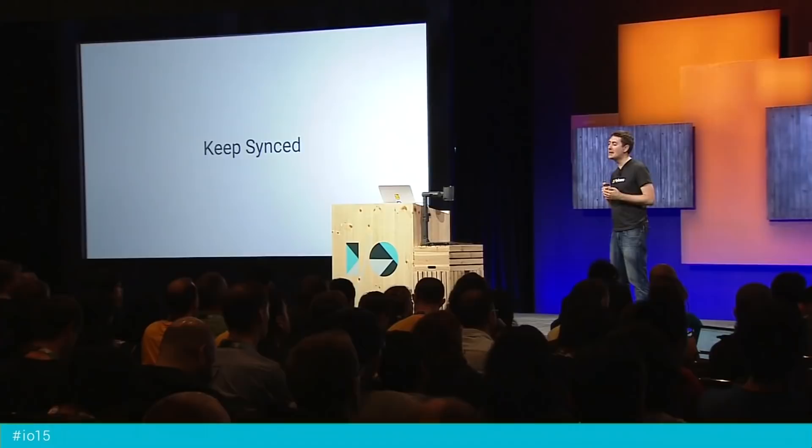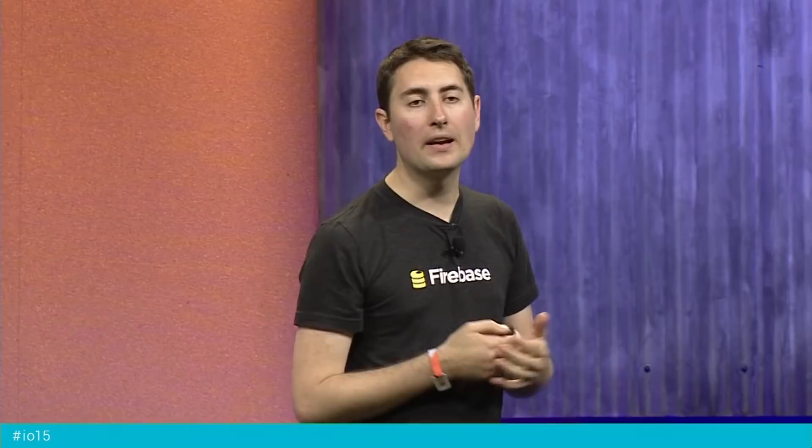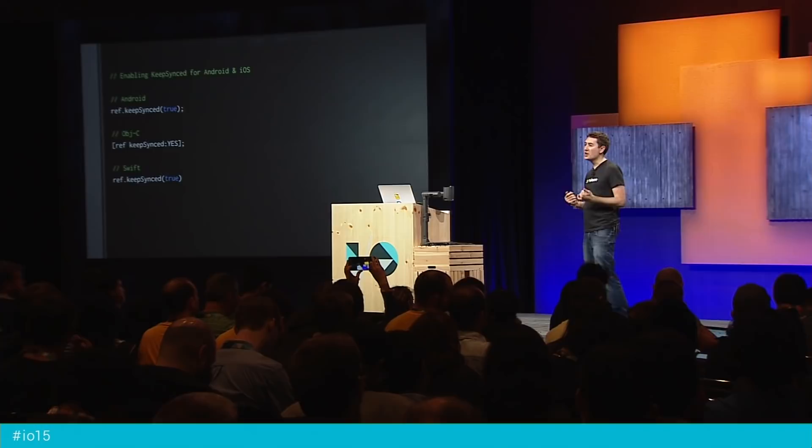The next piece of full mobile offline support is KeepSynced. KeepSynced lets you specify data that should be prefetched and kept up to date in case you go offline. For example, if you're building a social network, you can keep the profiles of your closest friends up to date so you can access them offline, along with their wall posts from the last time you had an internet connection. Again, this is just one line of code in Android, Objective-C, or Swift. With both disk persistence and KeepSynced, if your users go through tunnels, climb a mountain, or get on a plane, your applications continue to work seamlessly.